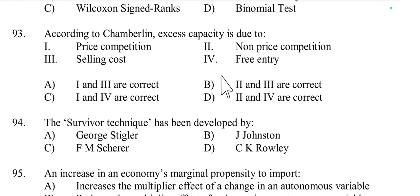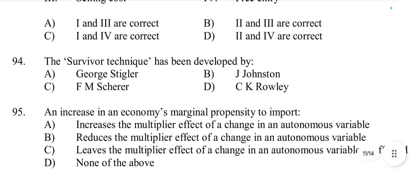Question number 93: According to Chamberlin, excess capacity is due to non-price competition and selling cost. These are the key factors leading to excess capacity. Chamberlin's model of monopolistic competition suggests that firms maintain excess capacity as a result of engaging in non-price competition such as advertising or product differentiation, and incurring selling costs, which leads to production levels below optimal capacity. So options 2 and 3 are correct.